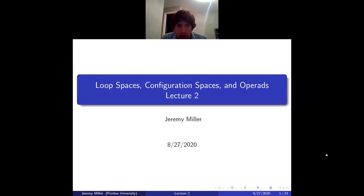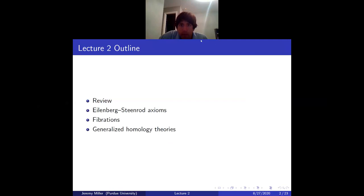So this is day two. We're planning on proving Poincaré duality via what I'm calling space-level Poincaré duality, and half of that is finding a space whose homotopy groups agree with homology. The plan for today is we'll have a quick review, and then I'll talk about the Eilenberg-Steenrod axioms.